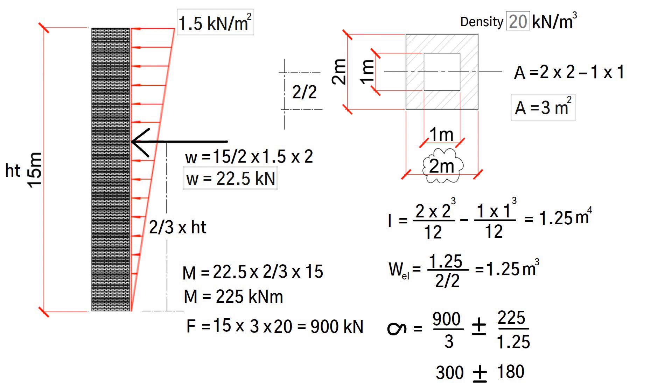We should convert these units to newtons per millimeter squared, which means we need to divide our results by 1000. This gives us 0.12 newtons per millimeter squared compression on the leeward face.